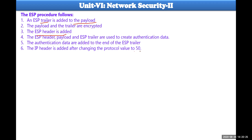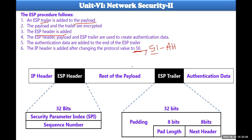If you are sending that particular packet using ESP protocol, the IP header protocol value will be 50. And if you are using AH protocol, the protocol value would be 51. So the IP protocol value 51 indicates AH protocol implementation, and the protocol value 50 indicates ESP. You are incorporating your ESP protocol into your packet when the value is 50.